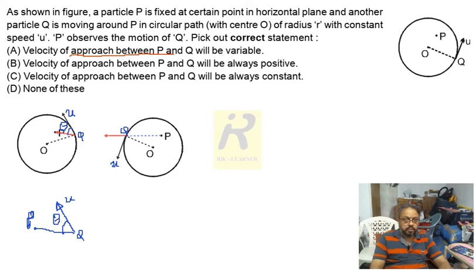So that means, you can easily guess, the component of the velocity can be written here along QP. So which is U cos theta. U cos theta. And definitely it is positive.